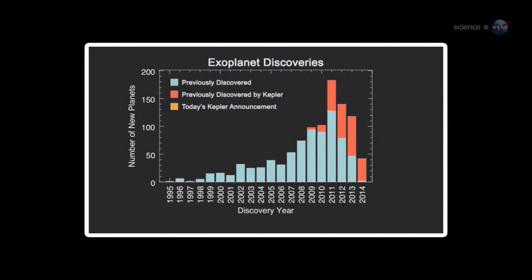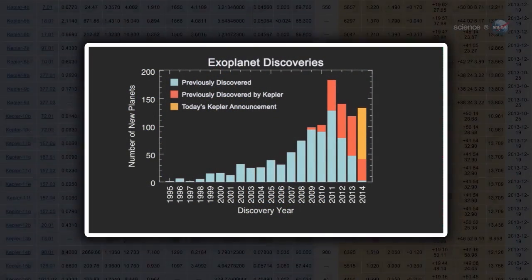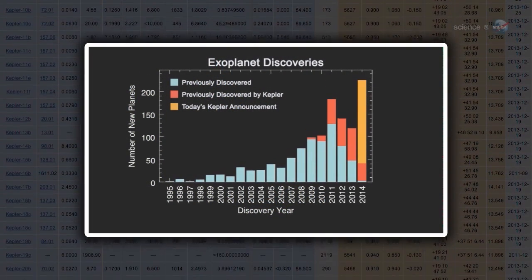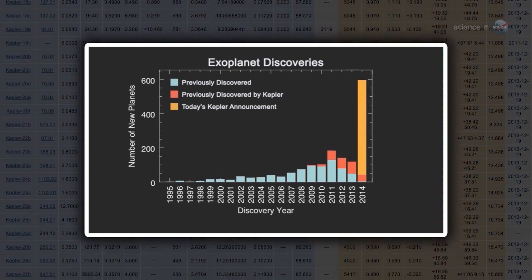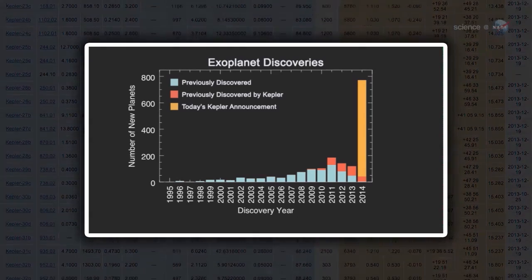Kepler has always been good at finding planets. Even before the announcement, the observatory had confirmed 246 new worlds outside the solar system. The latest discoveries almost quadruple that number.